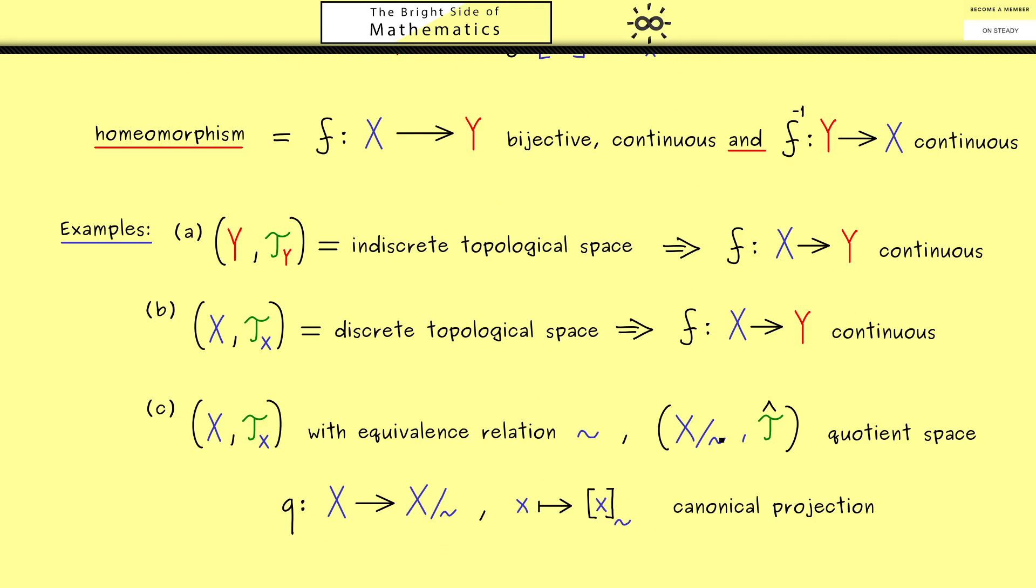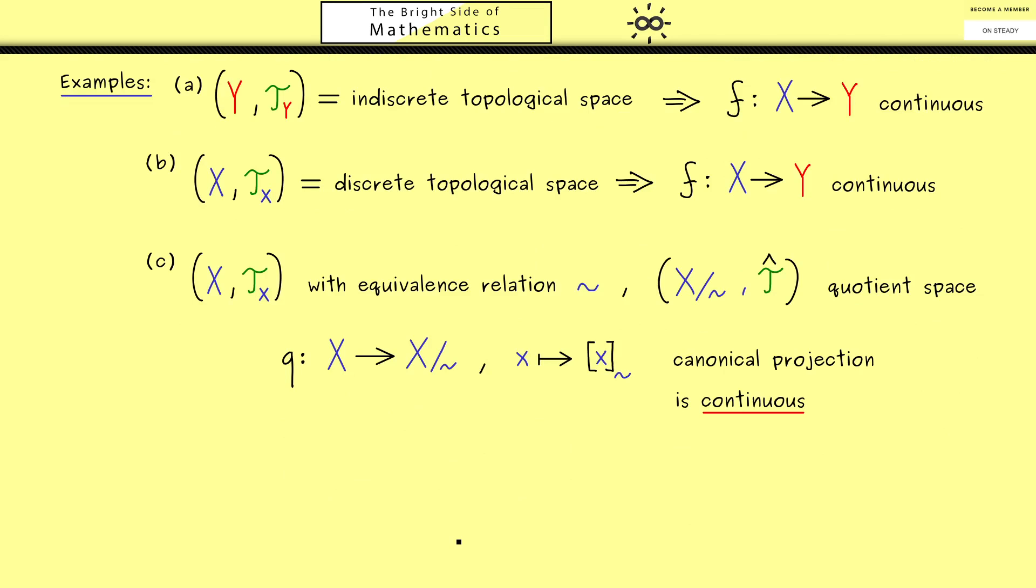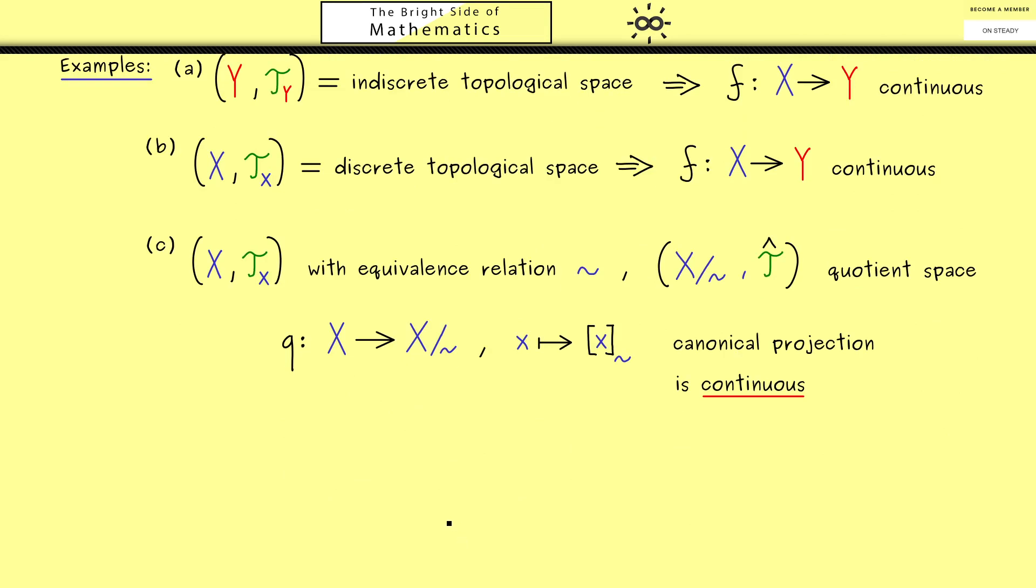And now by the definition of the quotient topology, we know q is a continuous map. In other words, the quotient space is defined in such a way that the canonical projection is continuous. Okay, there we have some general examples, but before we continue we should go one step back and recall the introduction.